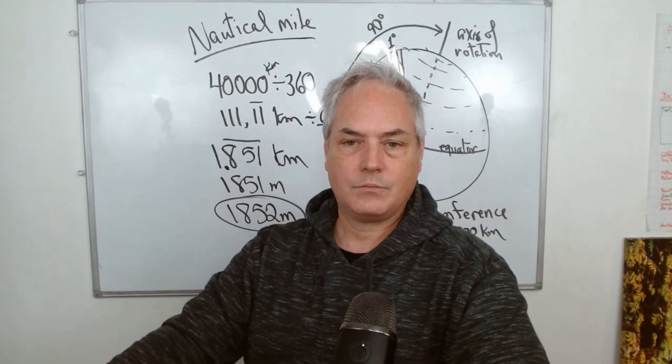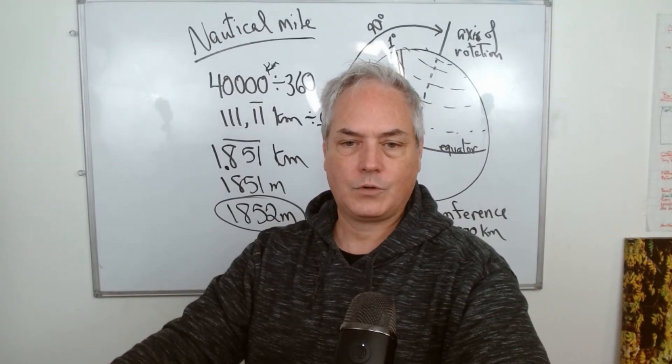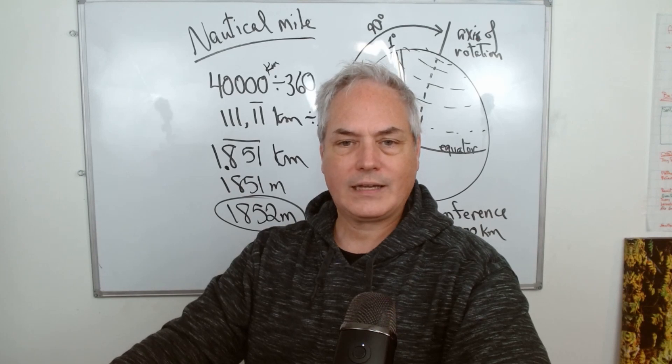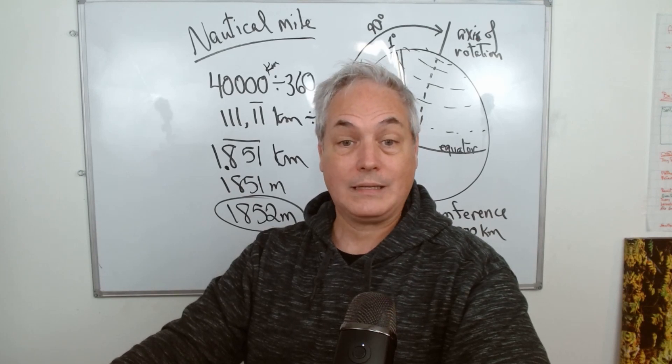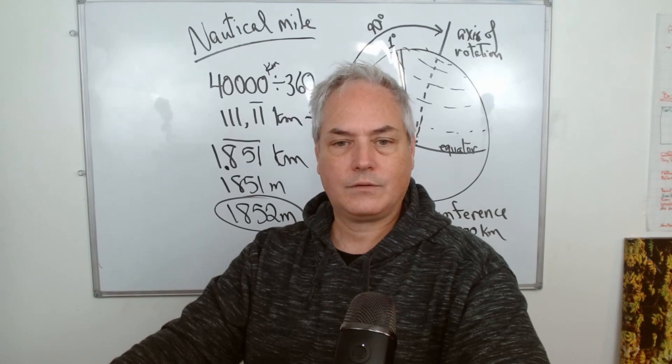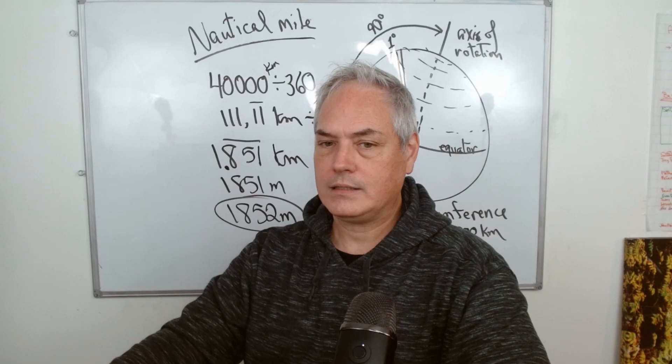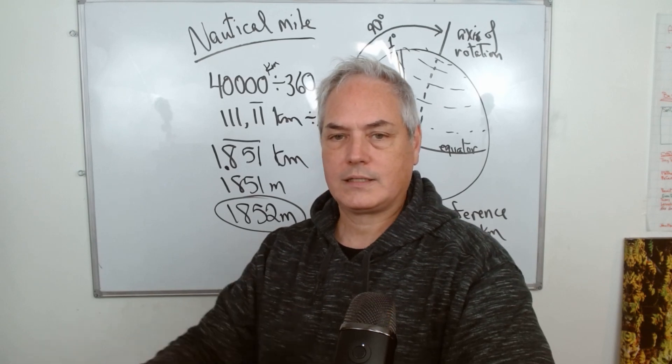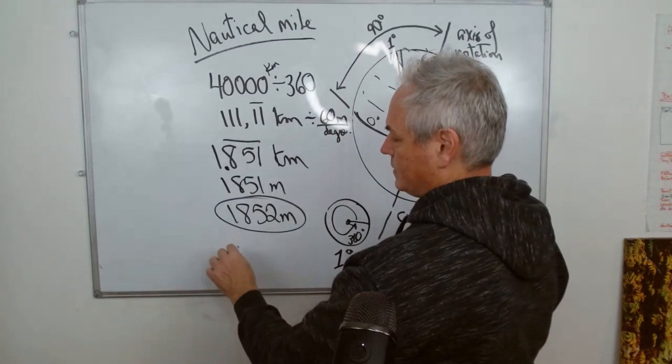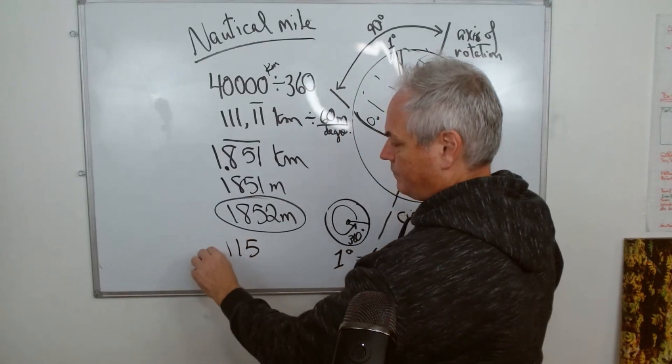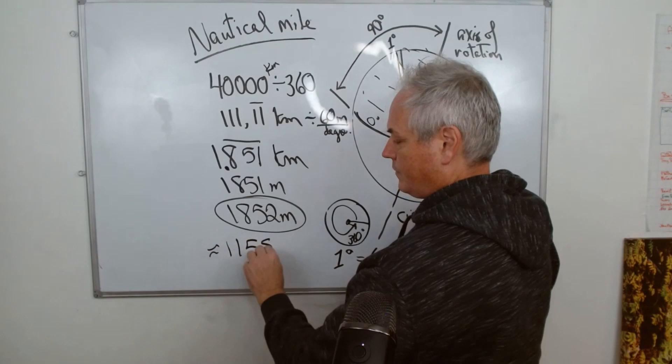Let me do another calculation. I'd like to know how many miles that is. So 1,852 divided by—I think it's 1.6—so it's 1.15...